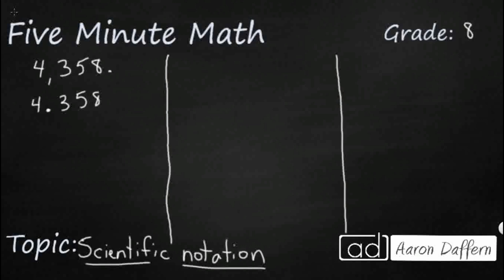Well, I'd have to go over once, twice, three times. So if I wanted my 4.358 to match my 4,358, I'd have to move it over to the right three times, which means it's going to be...